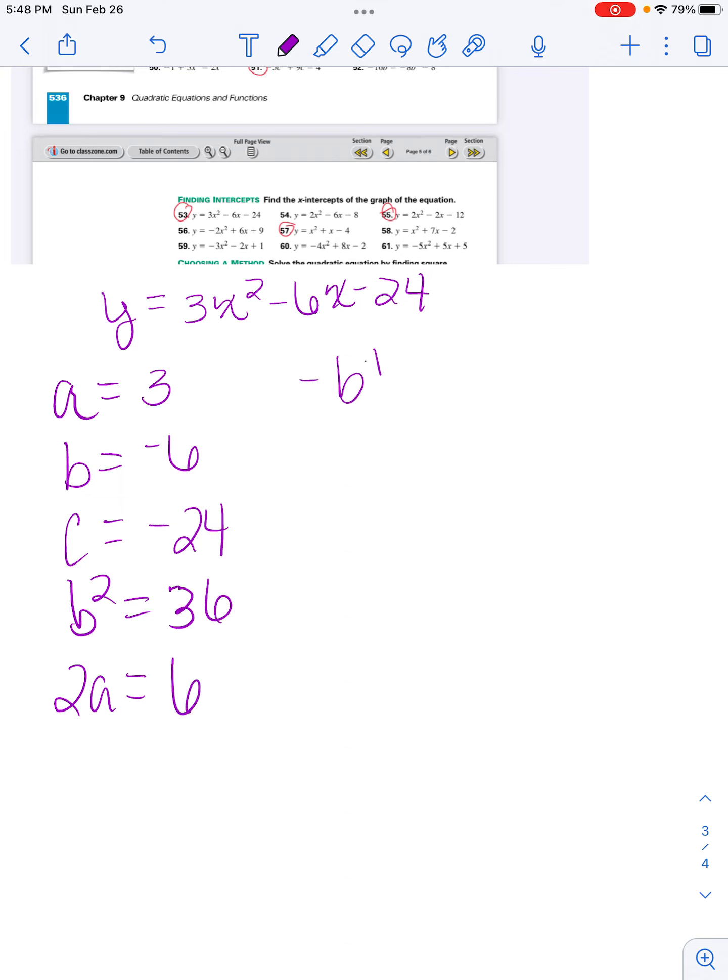So my formula for quadratics: negative b plus or minus square root of b squared minus 4ac over 2a.